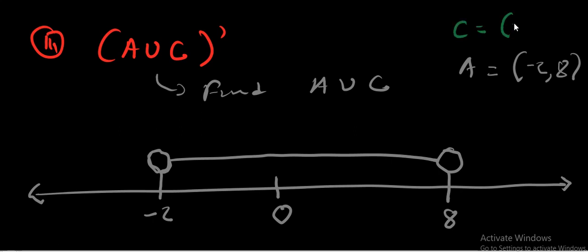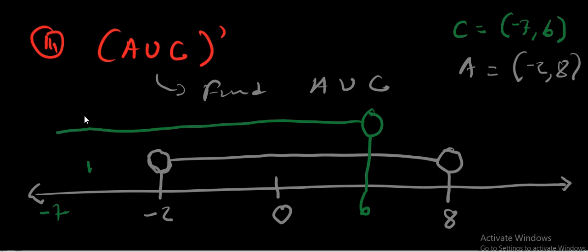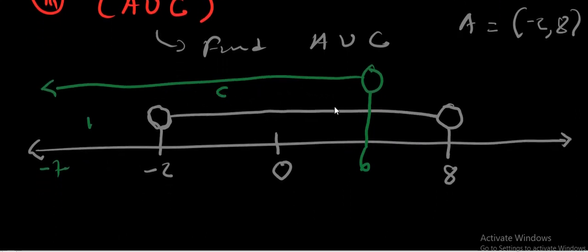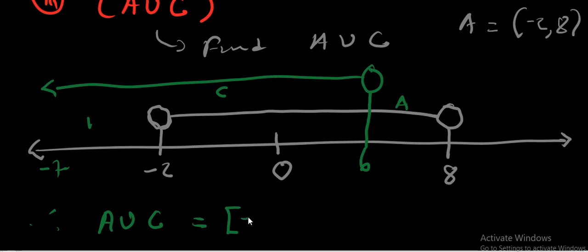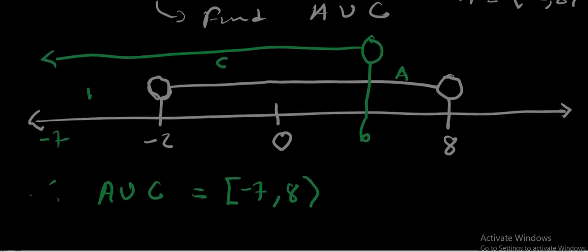On the same number line, show set C: set C is open bracket negative 7 comma 6, open bracket. Starting from negative 7 — which is part of the universal set — going to 6, which is open. The union combines both sets. Looking at the union of set A and set C, it spans from negative 7 to 8. So A union C equals block bracket negative 7 comma 8, open bracket.